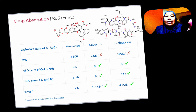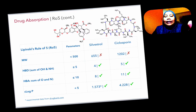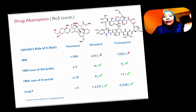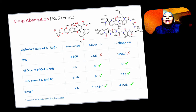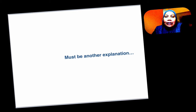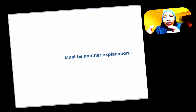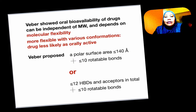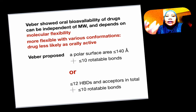But if you take Silvestrol and also Ciclosporin — Silvestrol is a very potent compound, and Ciclosporin is a very good drug — they fulfill everything in Lipinski's Rule of Five except for molecular weight. These are huge molecules; the molecular weight is bigger than 500. So there must be another explanation for why these big molecules can actually serve as drugs. Another scientist comes in and offers another explanation to this observation.